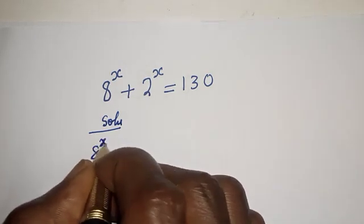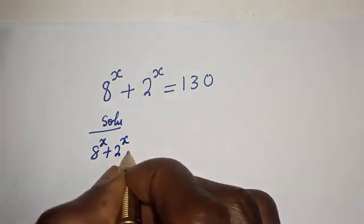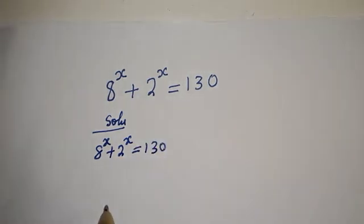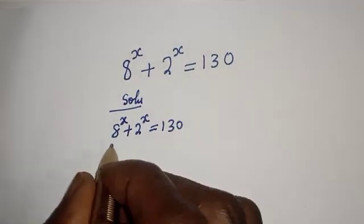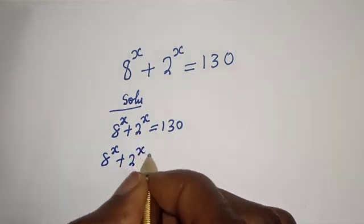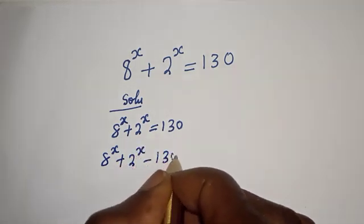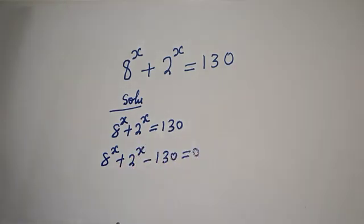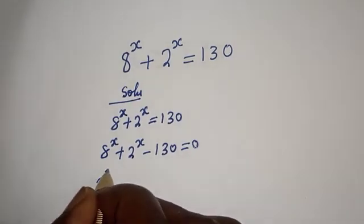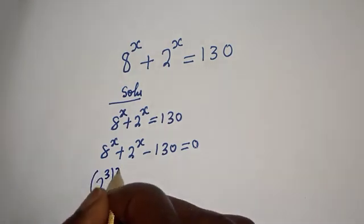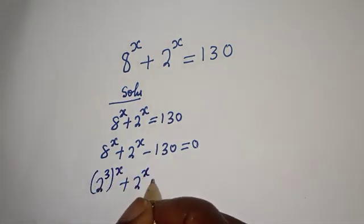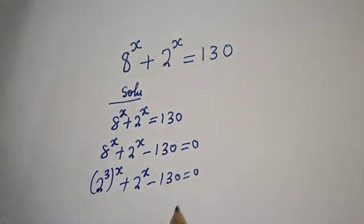h raised to power s plus 2 raised to power s is equal to 130. Then h raised to power s plus 2 raised to power s minus 130 is equal to 0. h raised to power s can be written as 2 raised to power t, to the power of s, plus 2 raised to power s minus 130 is equal to 0.